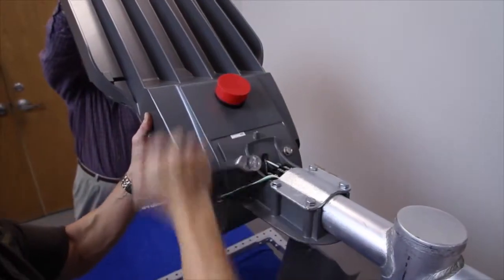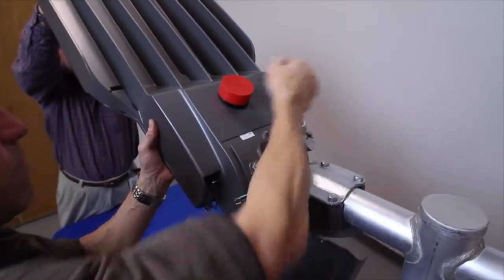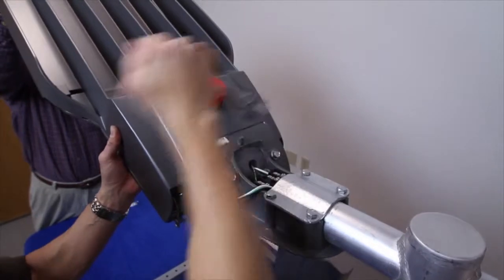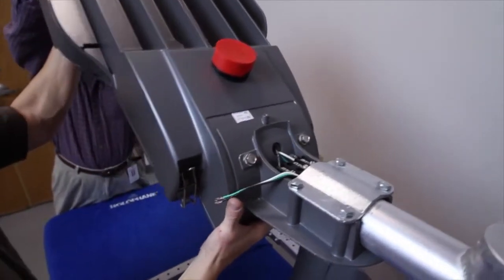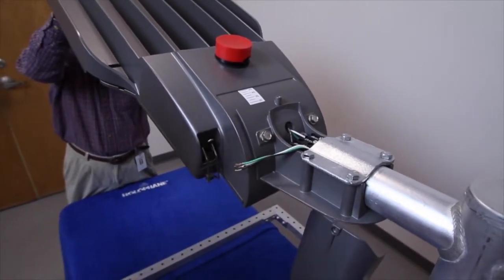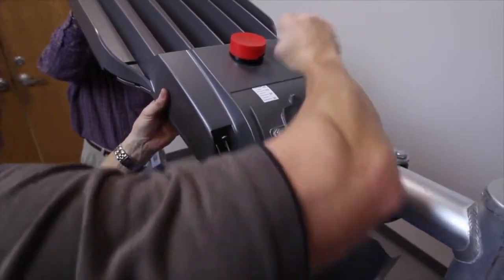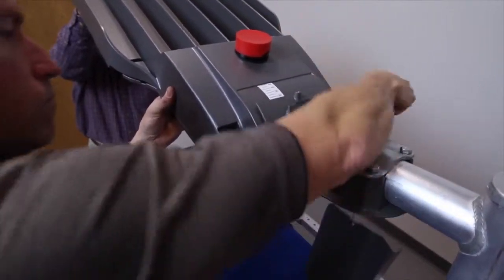To adjust the angle of the luminaire, one person should support the luminaire while another loosens the two mounting bolts. Reposition the luminaire to the desired angle. Once the luminaire is set to the correct position, torque the mounting bolts per the instruction manual.